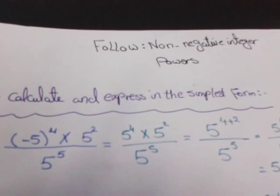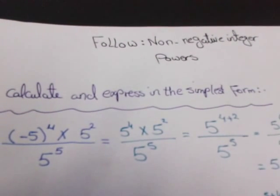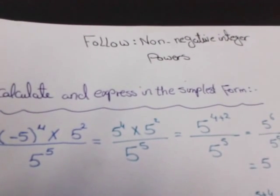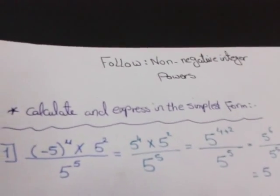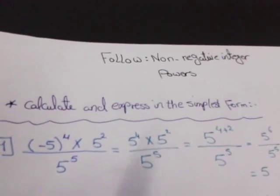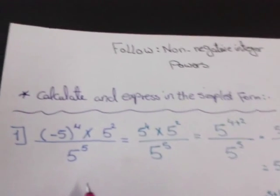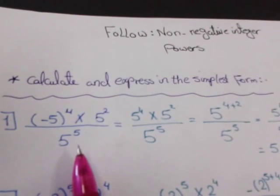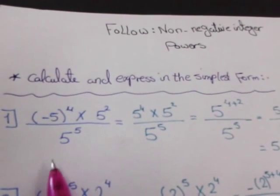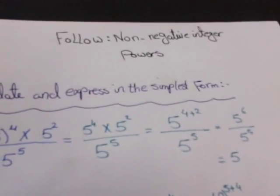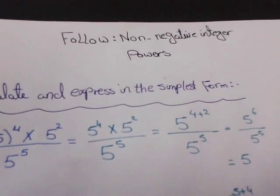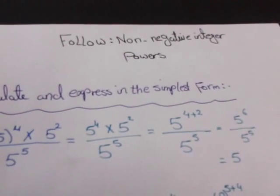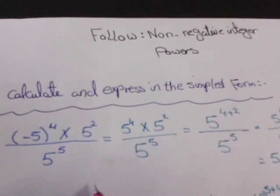Good morning students. First, today we will solve extra exercises on lesson two: non-negative integer powers. Calculate and express in the simplest form. Number one: negative five all to the power four, times five power two, over five power five. Here I have two operations: first multiplication and second division.